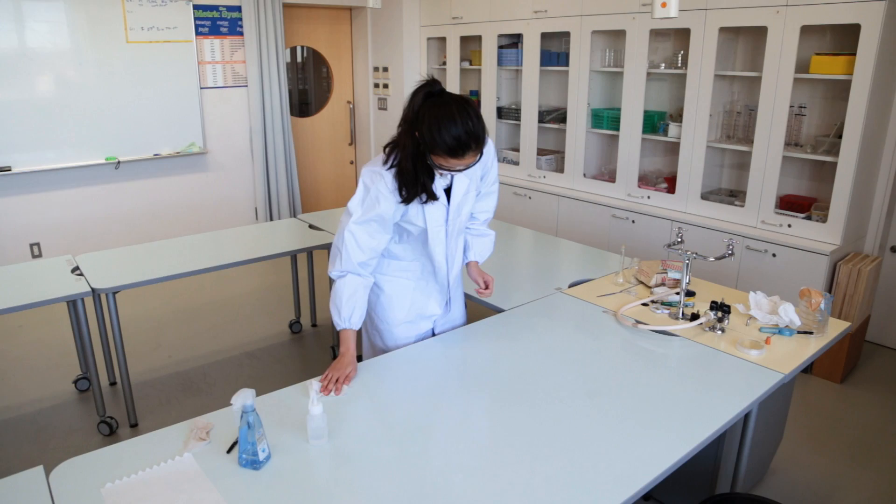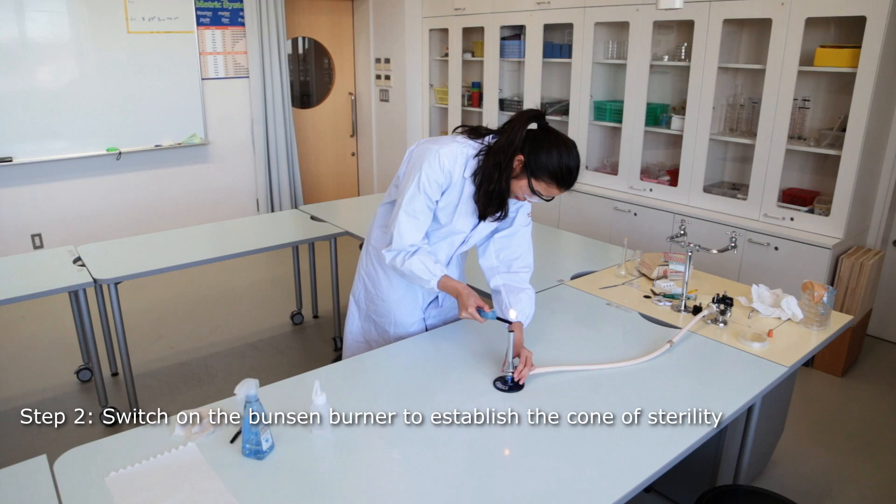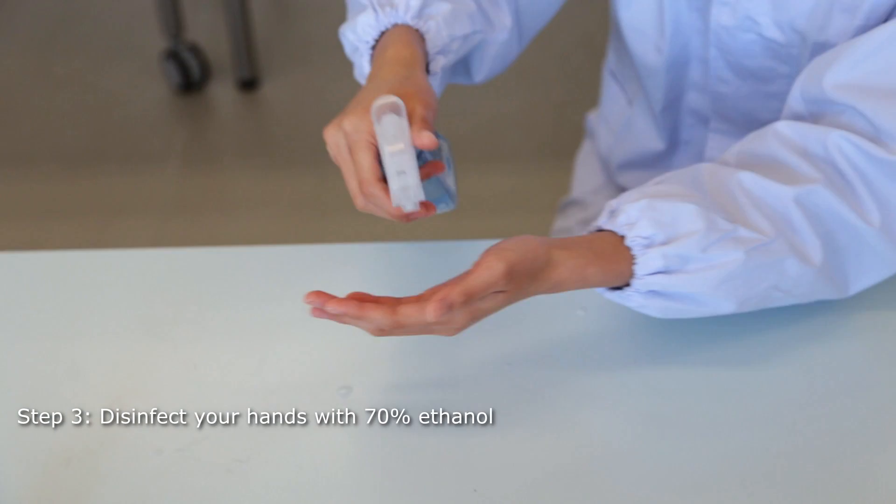Light up the Bunsen burner to establish a cone of sterility. Hot air creates an upwards current that prevents airborne contaminants from falling on your work. Make sure you conduct all of your sterile work within that zone.